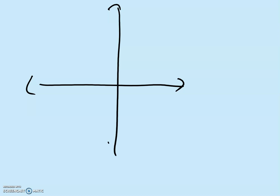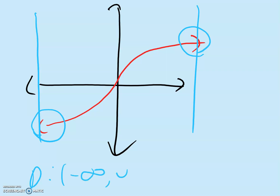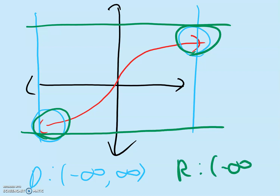Let's look at one more example — the graph of a cube root. A cube root looks something like this. For the domain, from left to right, you see we have an arrow going to the left forever and an arrow going to the right forever, so that gives you negative to positive infinity. For the range, from the bottom to the top — this arrow, even though it looks like it's going left, it's also gradually going down and will keep going down forever. And this arrow will also keep going up forever. So the range is also from negative infinity to positive infinity.